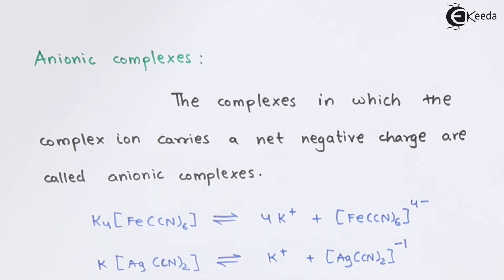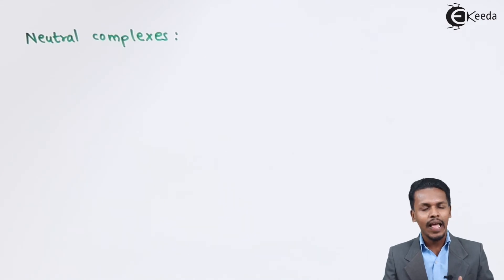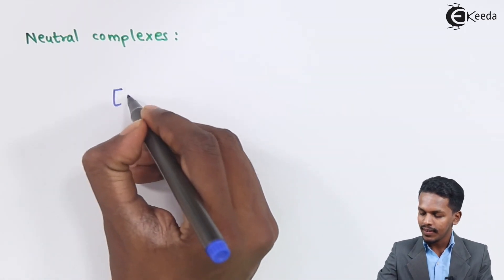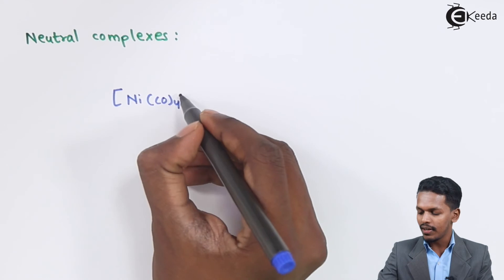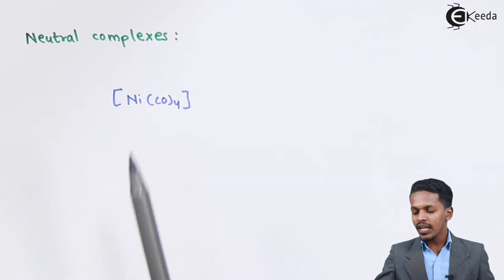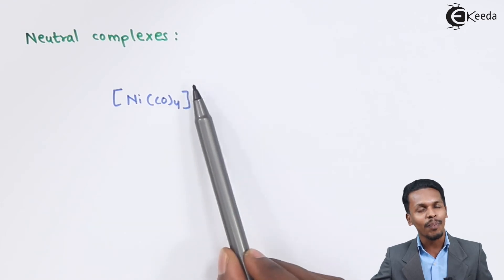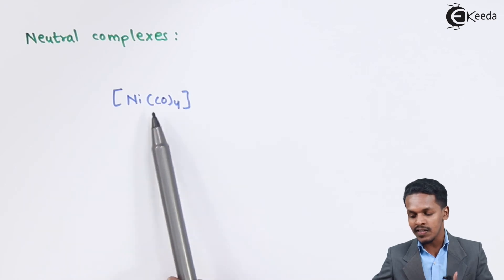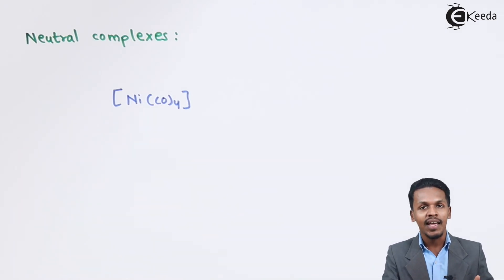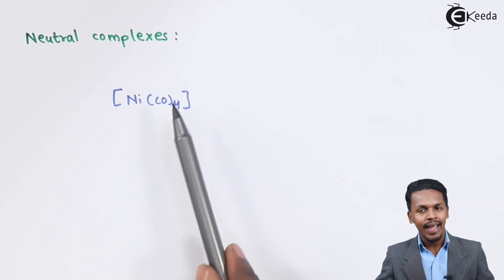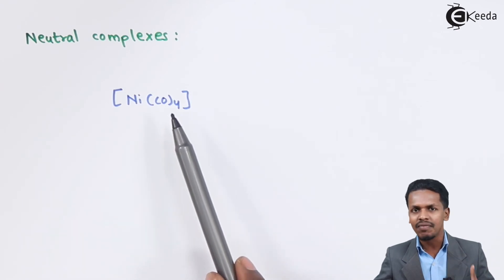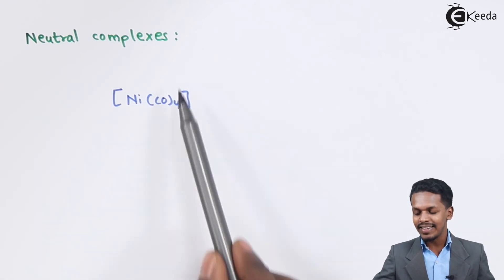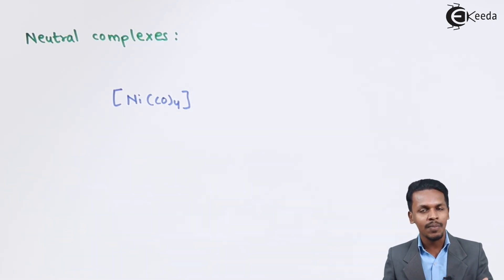The last type is neutral complex — a complex which carries no charge. For example, nickel tetracarbonyl Ni(CO)₄ has no net charge on the complex. It will not ionize into a primary or secondary ion, will not dissociate, and therefore acquires neither a positive nor a negative charge. That is why it is called a neutral complex.